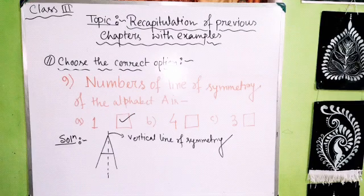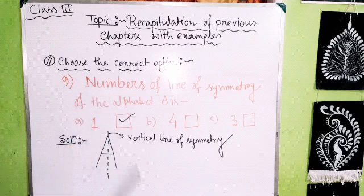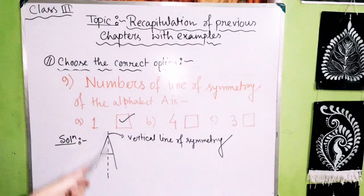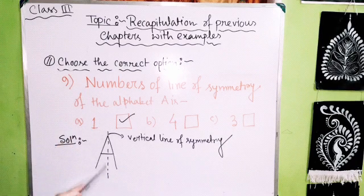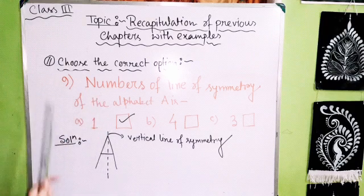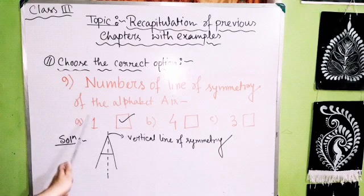Ninth question: Find the number of lines of symmetry of the alphabet A. I have drawn the alphabet A and the line of symmetry here. There is one line of symmetry in the alphabet A, and it is a vertical line of symmetry. So our answer is Option A: 1.